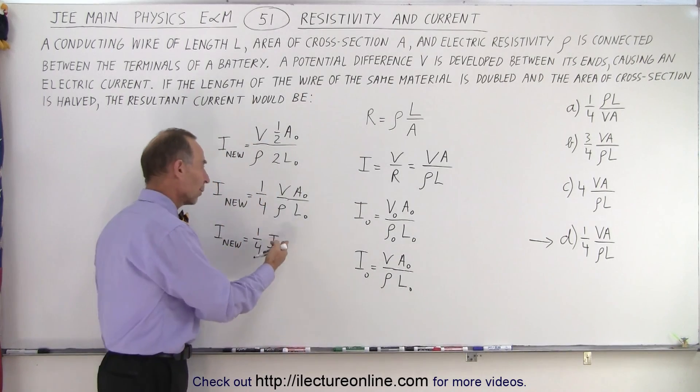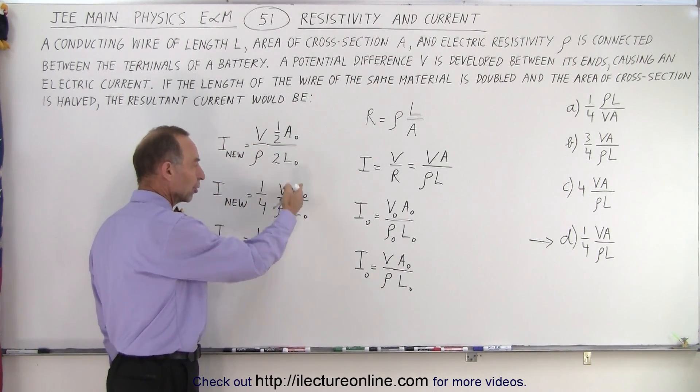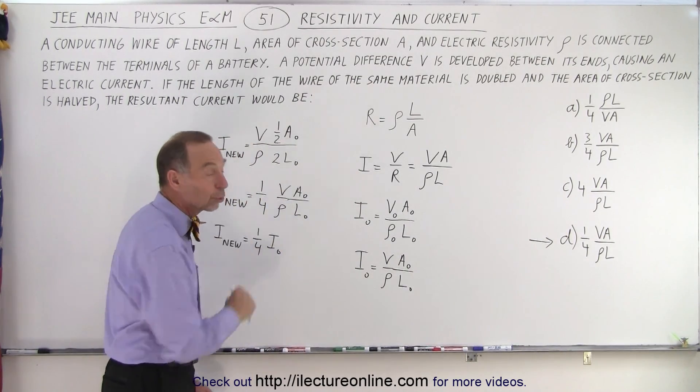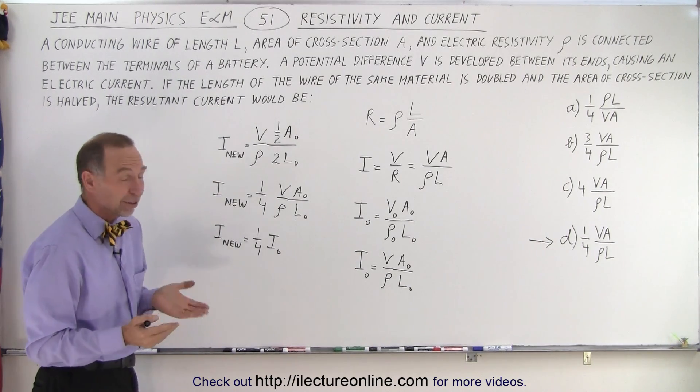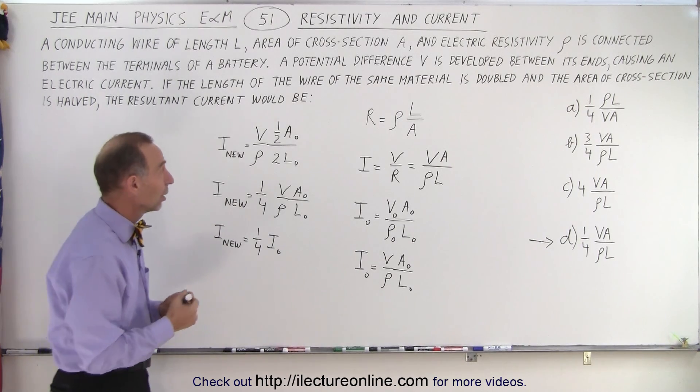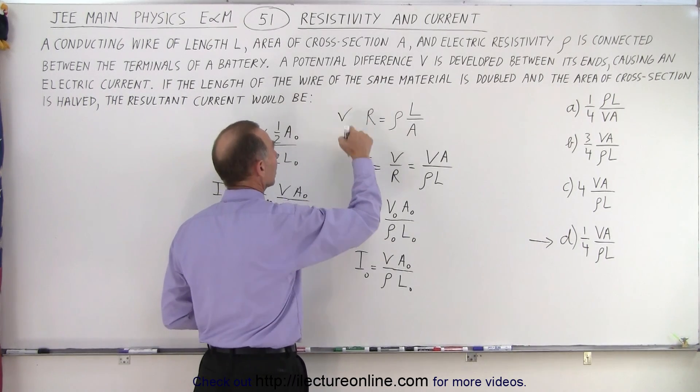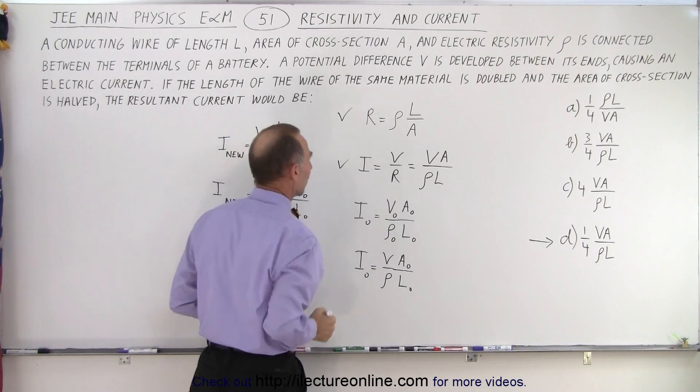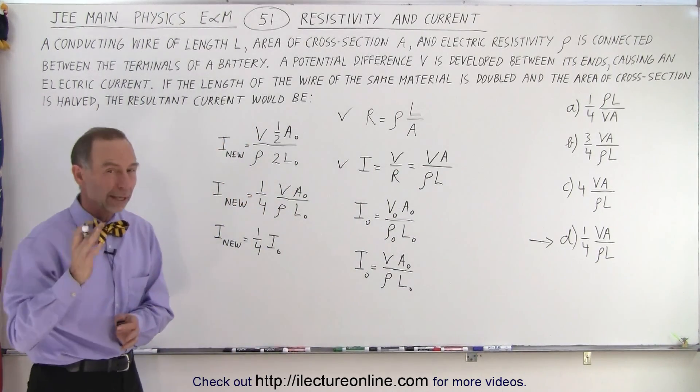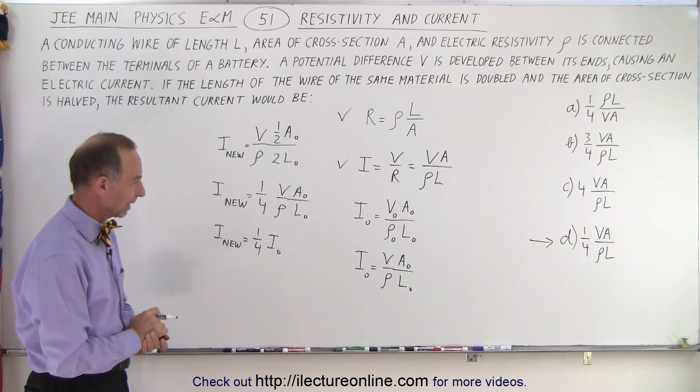We realize that A and L are the original A and L. It's one-quarter that, so answer D is the correct answer. This is pretty straightforward as long as you recognize that the resistance can be written in terms of the resistivity, and you remember Ohm's law. Combine the two, and there's your answer. That is how it's done.